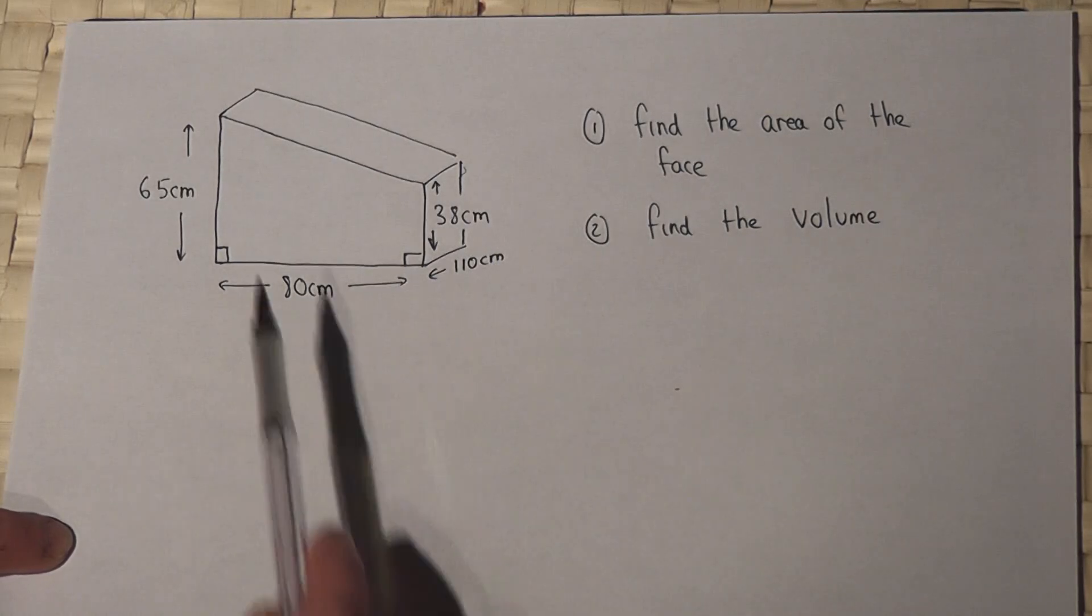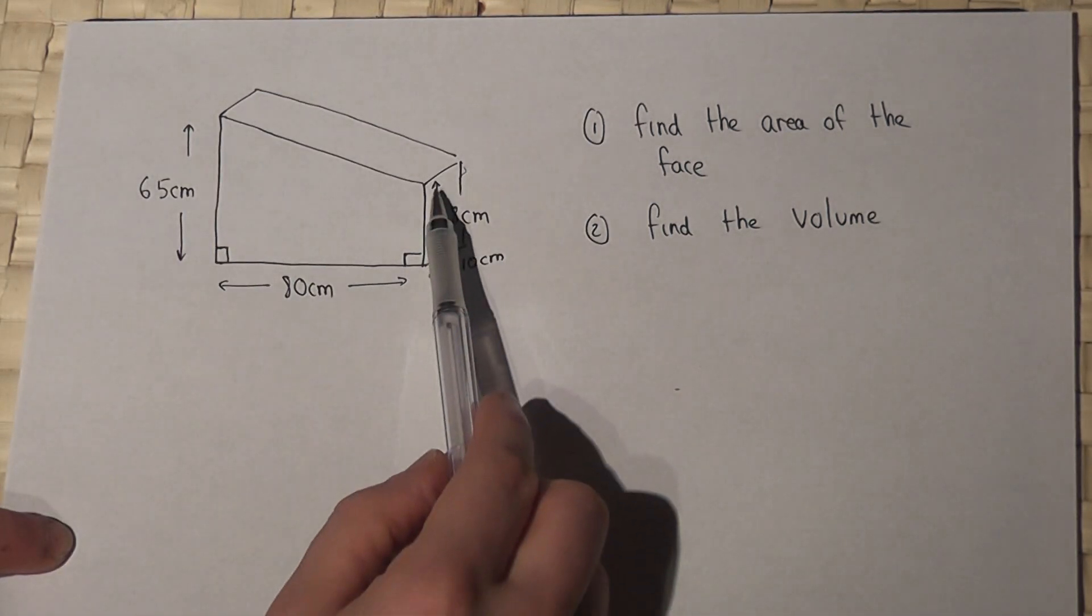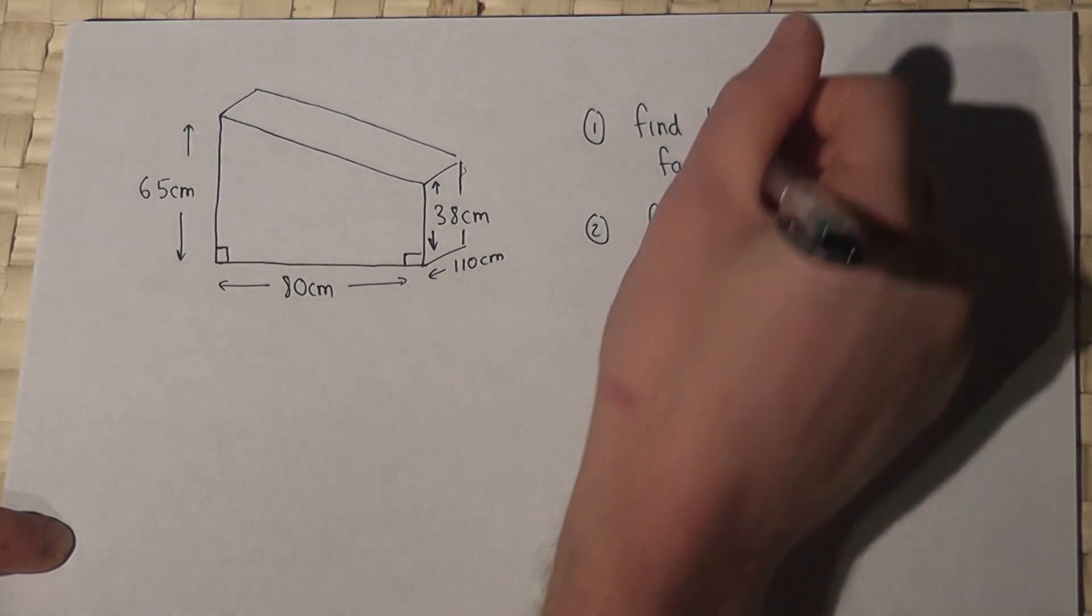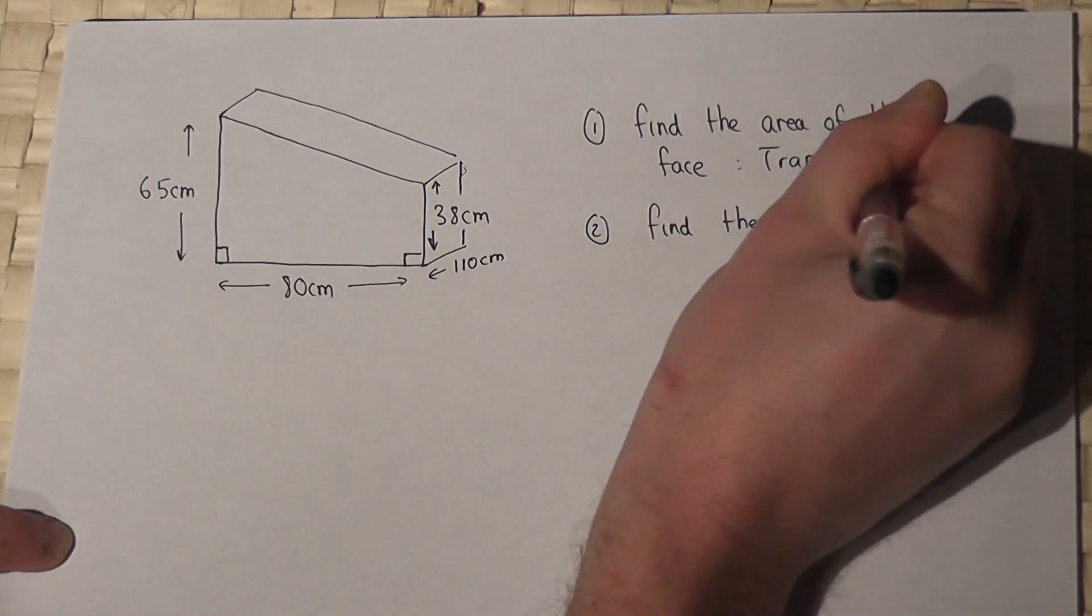In this problem we've got a prism whose face is a trapezium. So this face is a trapezium.